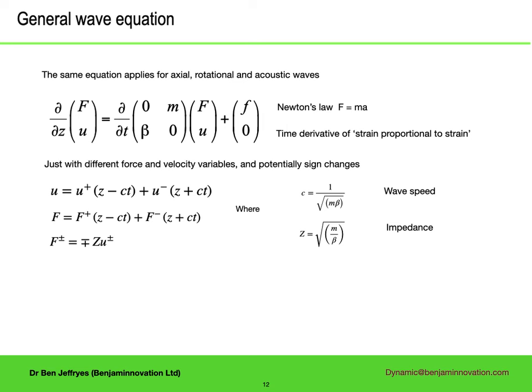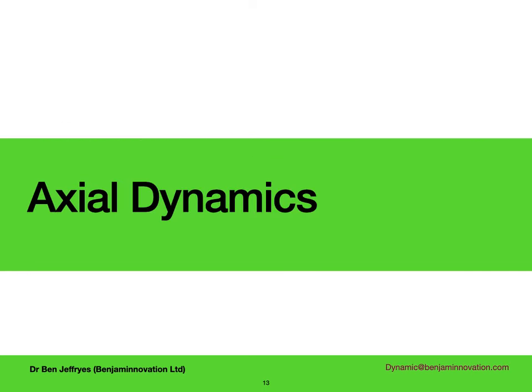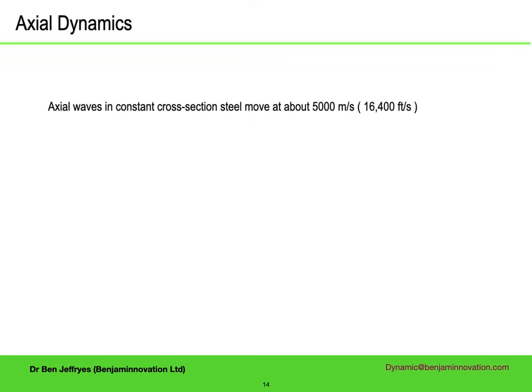The solutions can be arbitrary functions U⁺ and U⁻, and the force is proportional to the velocity through the impedance, with different sign in the two directions. Much of the time I will be decomposing the waves into different frequency and wave number components. If the drill string were constant cross-section, axial waves would move up and down the steel pipe at about 5000 metres per second. The effect of the tool joints on low-frequency sound is to slow it down a bit, so typically axial waves travel at about 4800 metres per second. Compared to sound in air — about 300 metres per second — these waves are very, very fast.